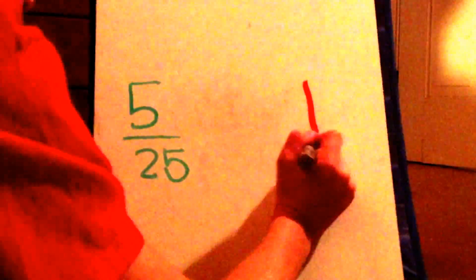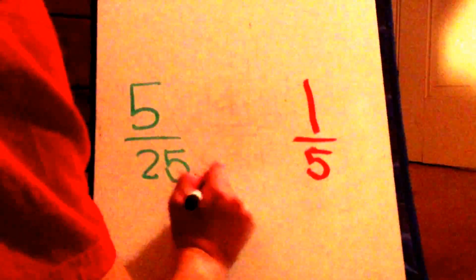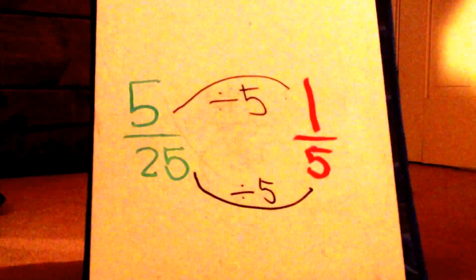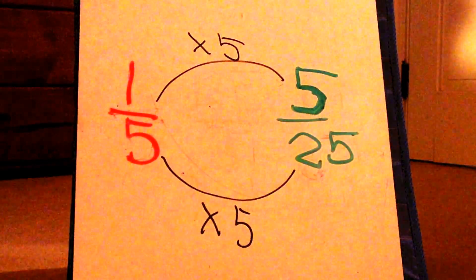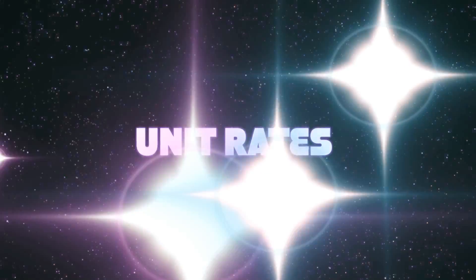Now let's see if one-fifth and five-twenty-fifths are equivalent ratios. So I wrote down these ratios, and you will notice that 25 divided by 5 is 5, the denominators, and 5 divided by 5 is 1. This can also be worked backwards, 1 times 5 is 5, and 5 times 5 is 25.